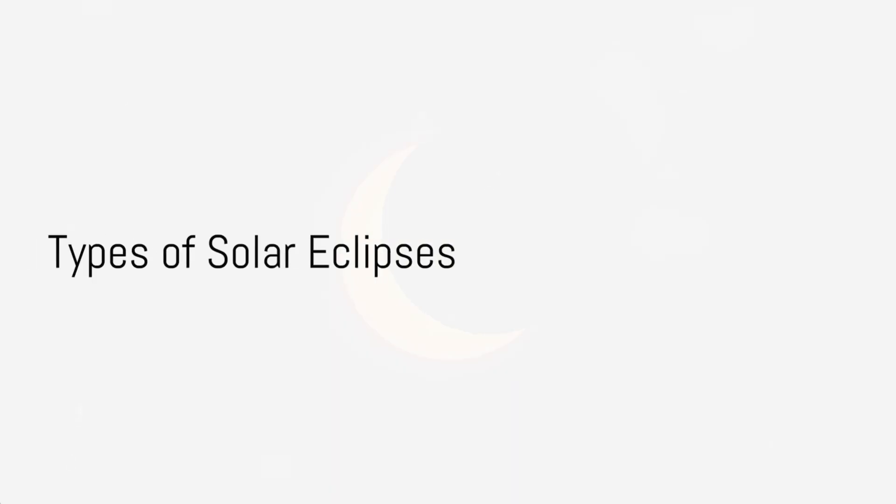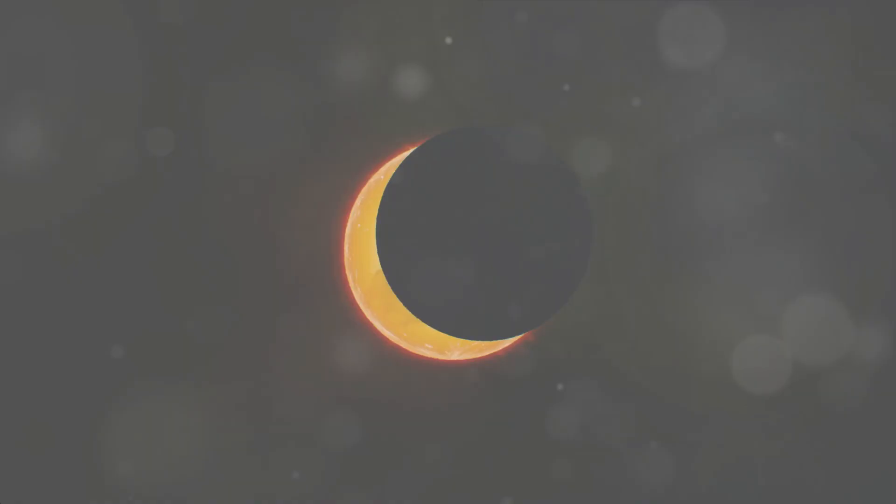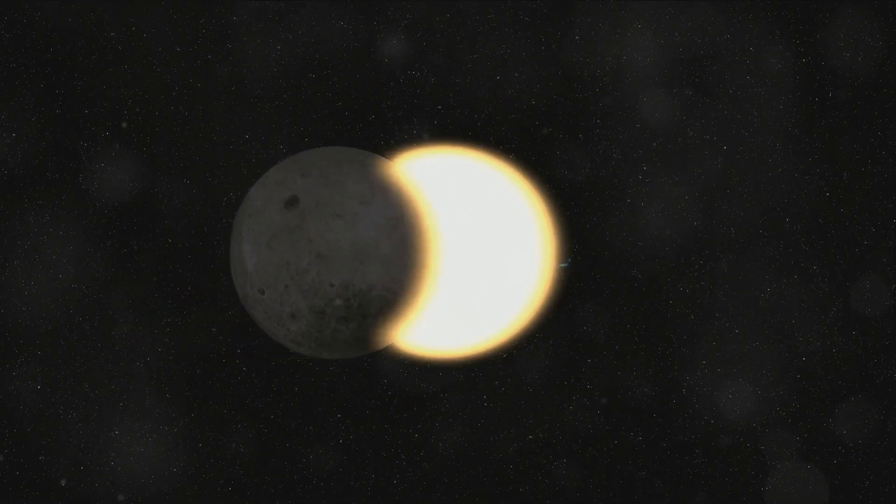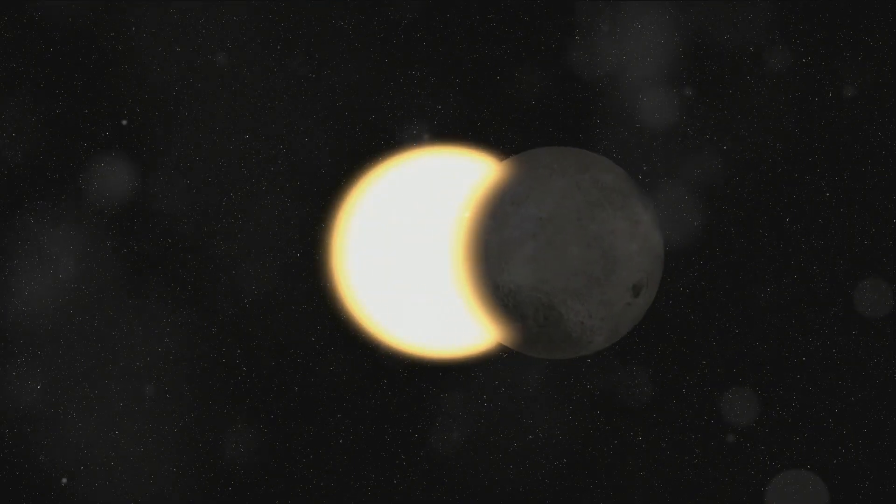Types of Solar Eclipses. There are three main types of solar eclipses: total, partial, and annular. During a total solar eclipse, the Moon completely covers the Sun, casting a shadow on Earth and revealing the Sun's corona.